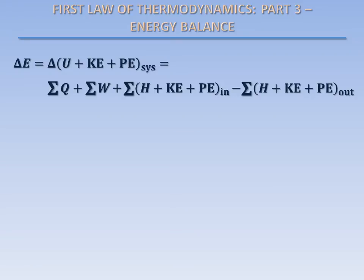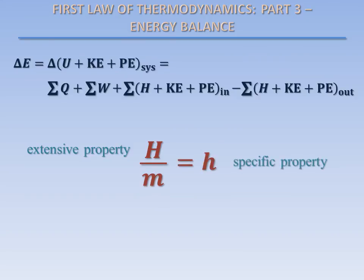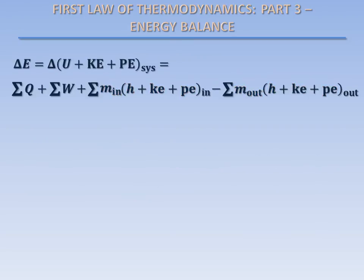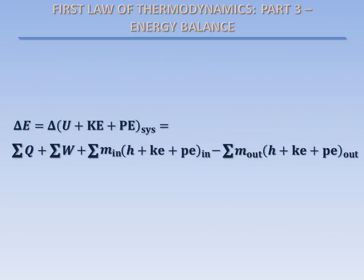Let's make one more change to our equation. Right now, the total enthalpy of the mass entering and leaving the system is denoted by a capital H. This is an extensive property, which means that its value depends on the size or extent of the system. If we divide this by the total mass, we end up with a specific property. A specific property is an extensive property per unit mass. Specific properties are usually denoted by lowercase letters. Here, the specific enthalpy is denoted by a lowercase h. We can write our energy balance in the following form, where the total mass in and out is multiplied by the specific enthalpy, the specific kinetic energy, and the specific potential energy of the mass flowing in and out of our system. This equation represents the energy balance of our system for some process. It is a mathematical expression of the first law of thermodynamics, or conservation of energy.